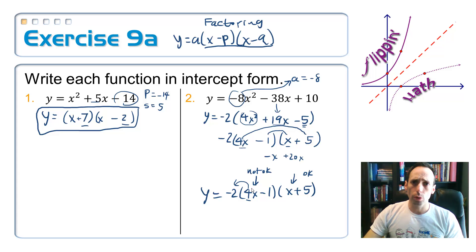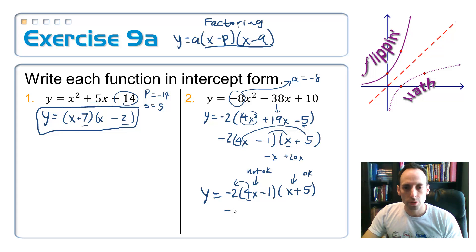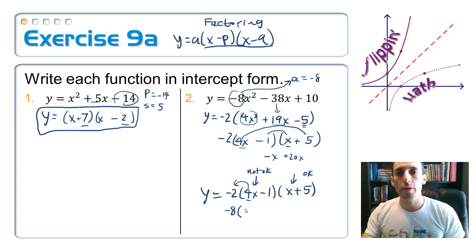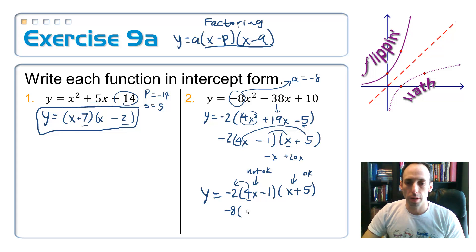Now, ordinarily, you'd only do that if it was a GCF. But, in this case, we have to pull it out, even though it's not. So, when I do pull it out, it's going to multiply times this 2 to make negative 8. Inside the parentheses, whenever you pull out that 4, you're dividing both things by 4. So, I'm going to have x minus 1 fourth times the x plus 5.